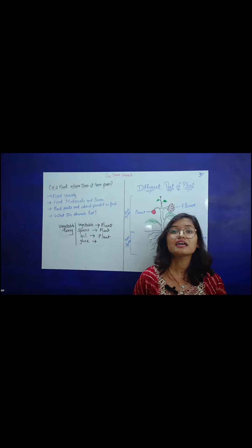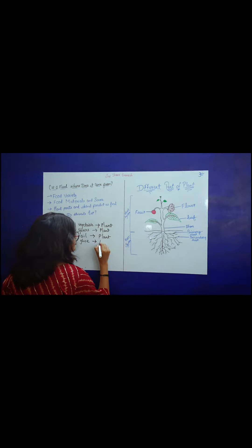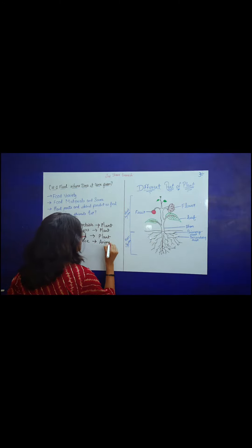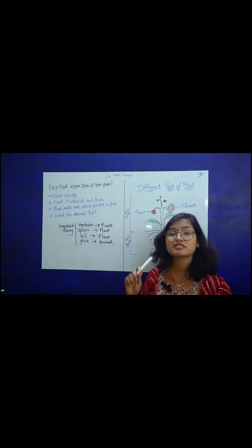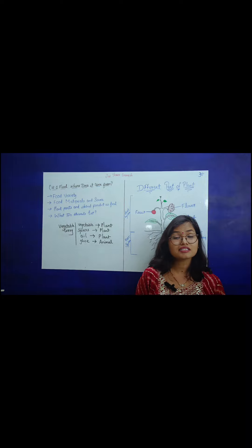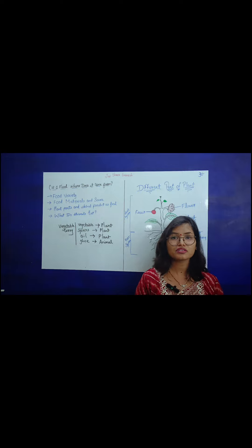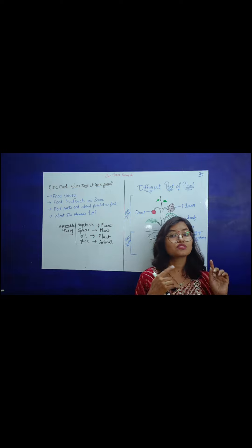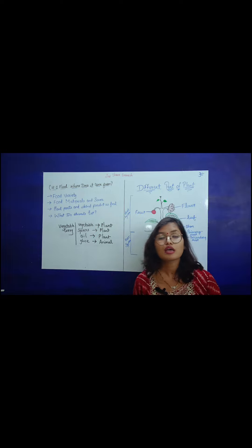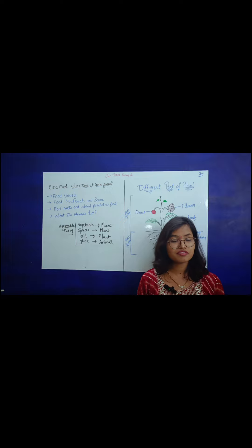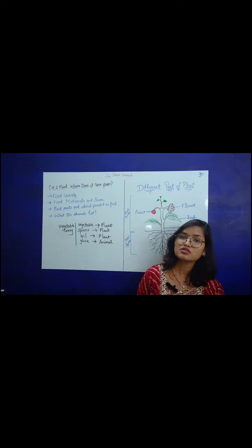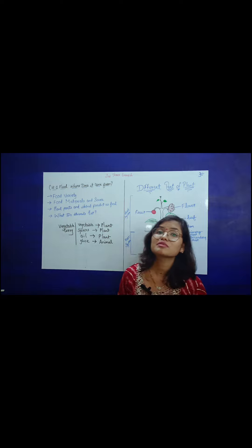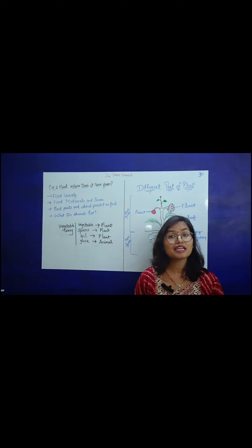For ghee, we prepare it from milk, and milk comes from animals. So the main source of milk is animals. The materials which we consume have two sources: plant products and animal products. Plant products include leafy vegetables, fruits, crops, pulses, and grains.